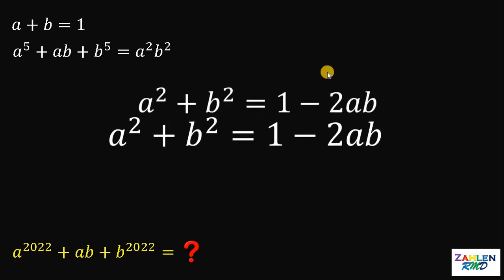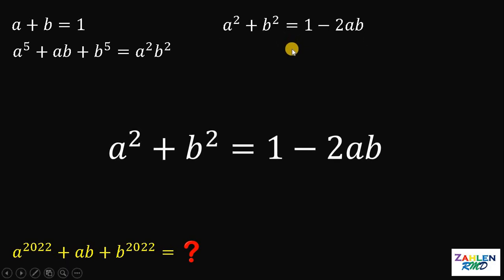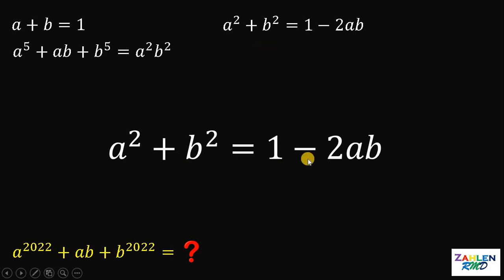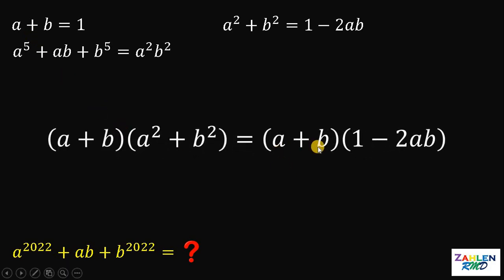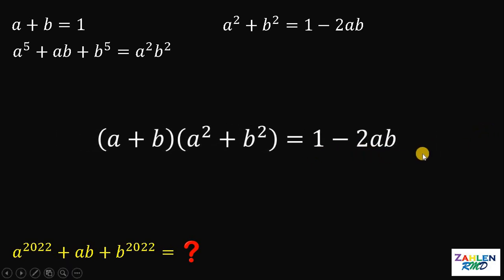Let's set aside that result for a while. Notice that in the second equation, we have a raised to the fifth power plus b raised to the fifth power. We need to find a cubed plus b cubed first. To do that, let's multiply both sides of a squared plus b squared equals 1 minus 2ab by a plus b.